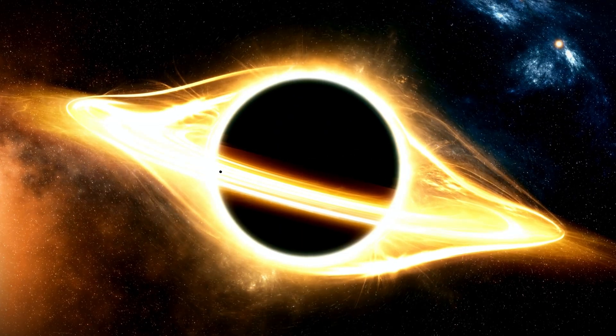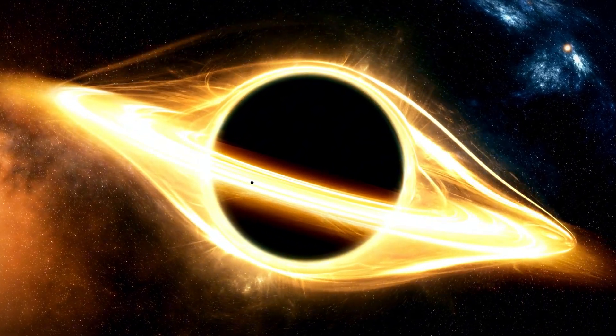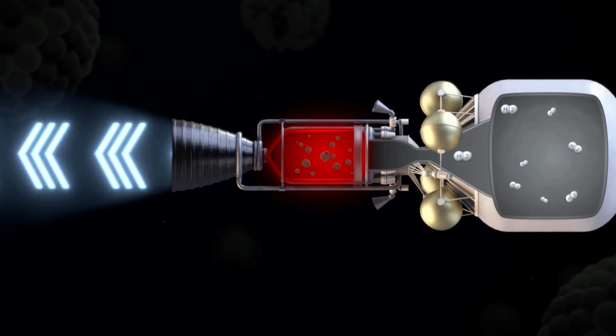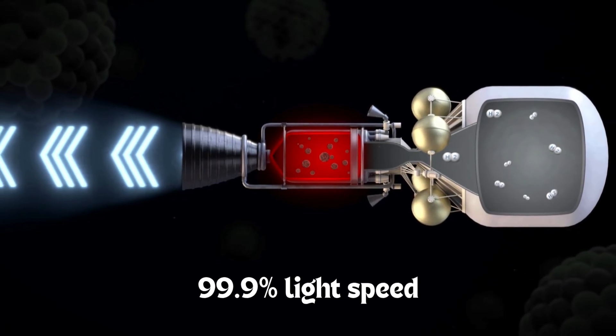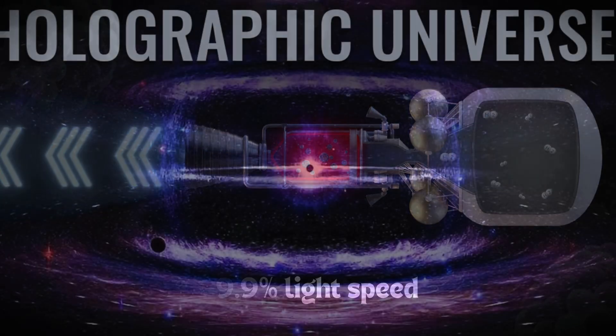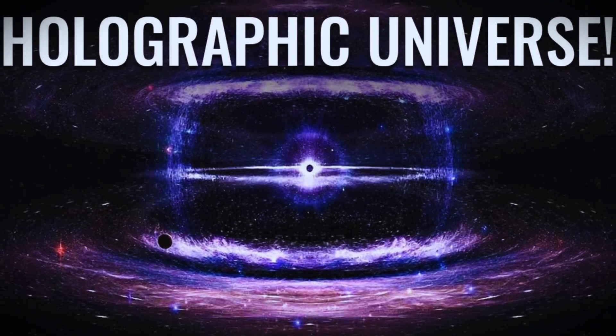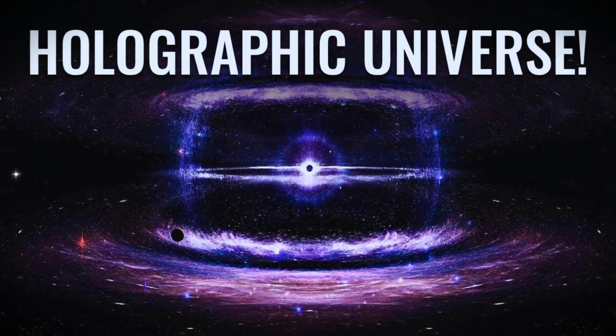Current long-shot bets: Black hole slingshots using frame-dragging effects. Neutrino propulsion could theoretically reach 99.9% light speed. Holographic universe hacks. If we're in a simulation, find the cheat codes. So, what's at the edge?